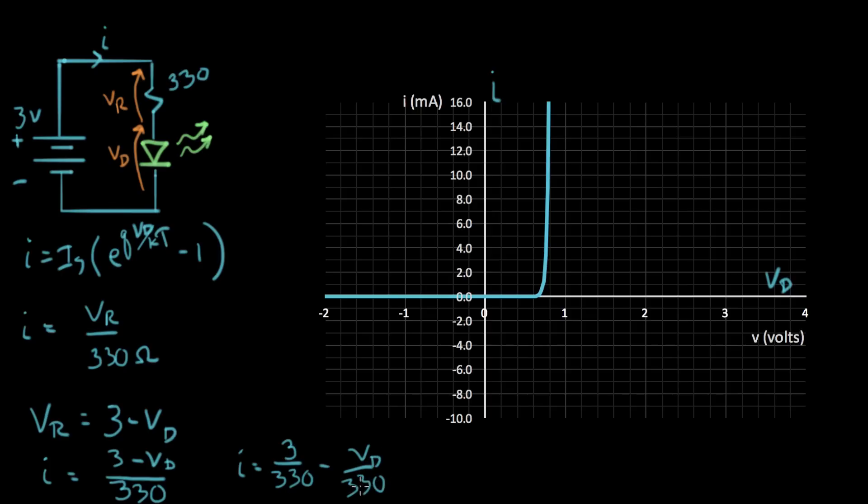I equals 3 over 330 minus VD over 330. And this is starting to look like the equation of a line. Let me write this to recognize it as an equation of a line: minus VD over 330 plus 3 over 330 is 9 milliamps. So this is the equation of a line, and the slope is right here, minus 1 over 330, and the I intercept is 9 milliamps.